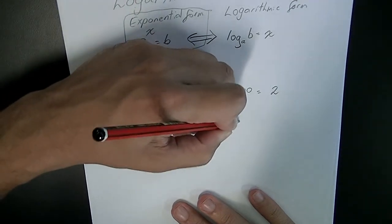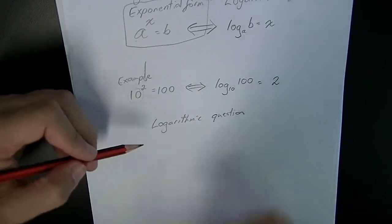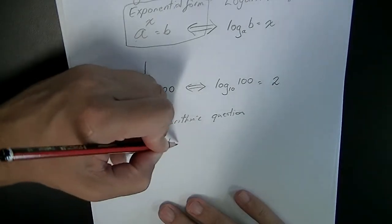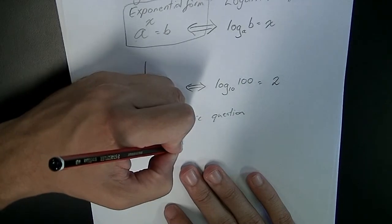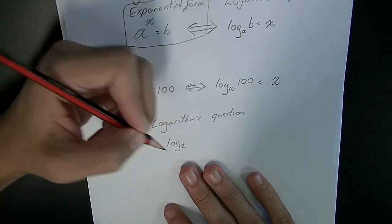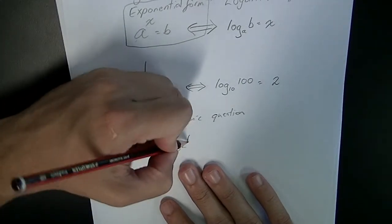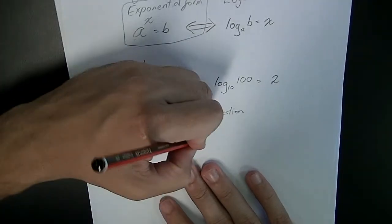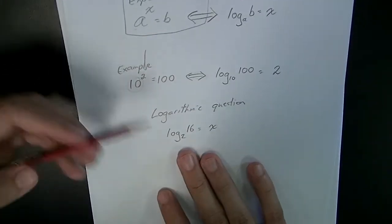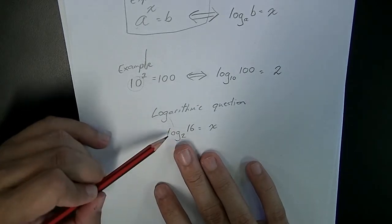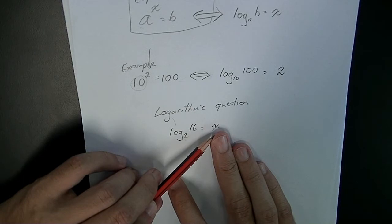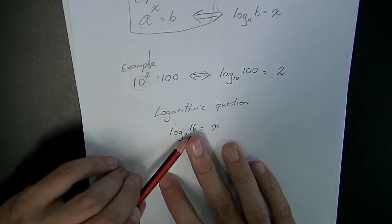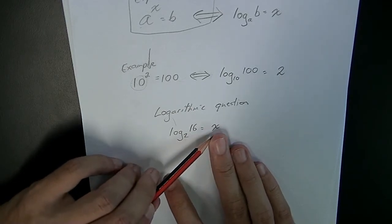You might get something like log base 2 of 16 equals x. What this question is really asking you is 2 to the power of something equals 16. What's the something?